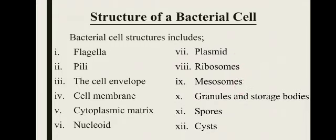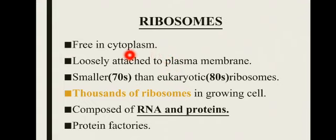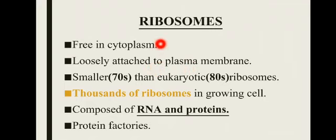First of all we will discuss about ribosomes. What are ribosomes? Ribosomes are tiny granular structures which are present freely in the cytoplasm or are loosely attached to the plasma membrane. یہ چھوٹے چھوٹے دانے دار structures ہوتے ہیں جو cytoplasm کے اندر یا تو freely exist کرتے ہیں یا plasma membrane کے ساتھ loosely attached ہوتے ہیں۔ مطلب یہ دو فارمت میں cell کے اندر exist کر سکتے ہیں۔